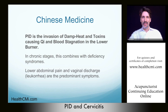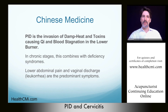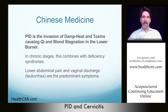In Chinese medicine, PID is the invasion of damp heat and toxins causing qi and blood stagnation in the lower burner. Particularly in the acute stage, we have heat and toxins. In the chronic stage, we have more deficiency syndromes: spleen qi deficiency, kidney qi deficiency, yin deficiency. We'll have a complicated pattern of cold and heat patterns that tend to come about as a result of chronic PID. In the acute stage, it can come on as a strong febrile disease.